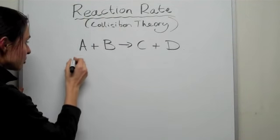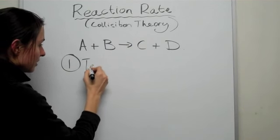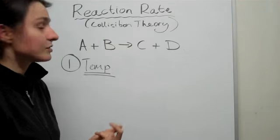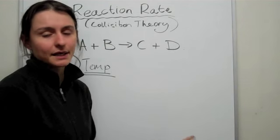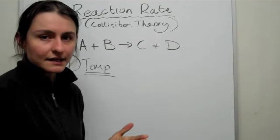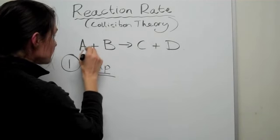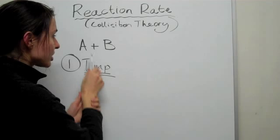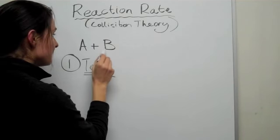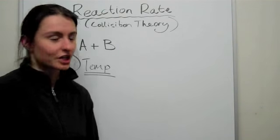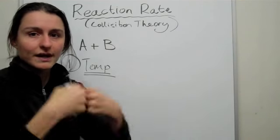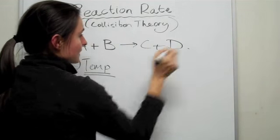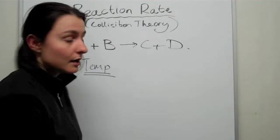The first thing that changes the reaction rate is temperature. We need to know what causes the reaction rate to increase and understand the basic mechanisms behind it. If you increase the temperature, you increase the speed of A and B, so A and B are going to be traveling really quickly and are going to collide with greater force, which helps create C and D faster.